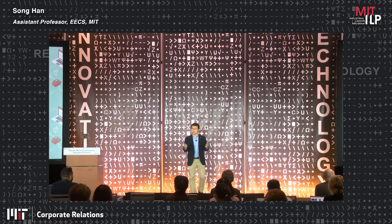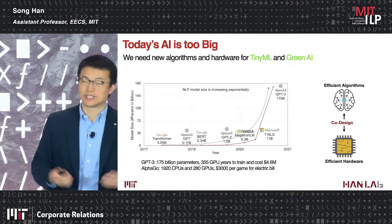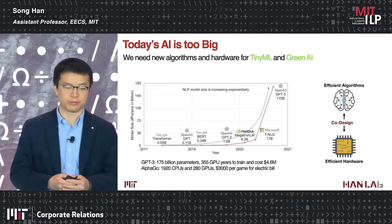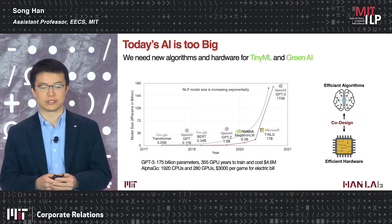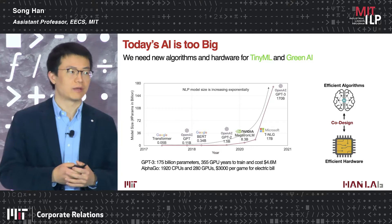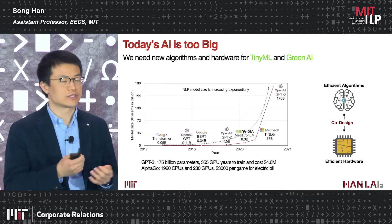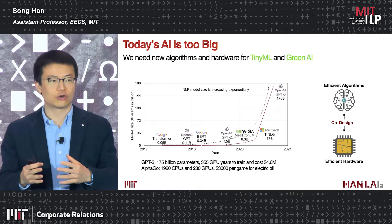Good afternoon, everyone. Today we are going to talk about TinyML and efficient deep learning computing to make AI more efficient on edge devices. Today's AI is too big — it takes a lot of effort to train and run inference for models like GPT-3, with 175 billion parameters, costing $4.8 million to train. However, there's a huge demand to deploy AI models on edge devices for better latency, lower cost, and better privacy without sending data to the cloud.